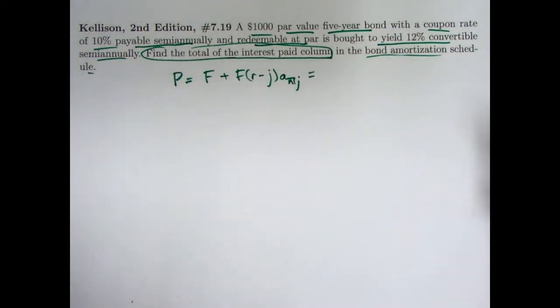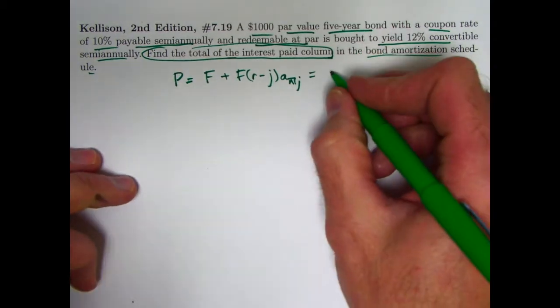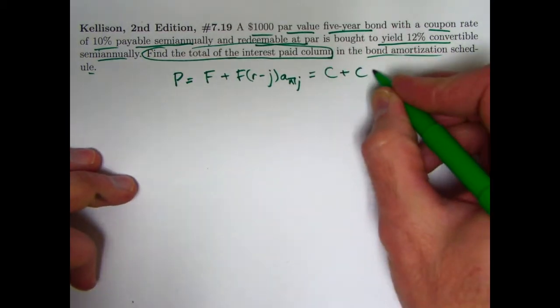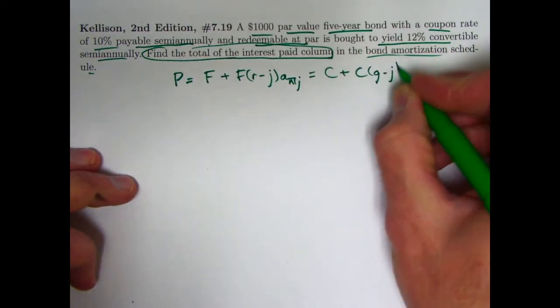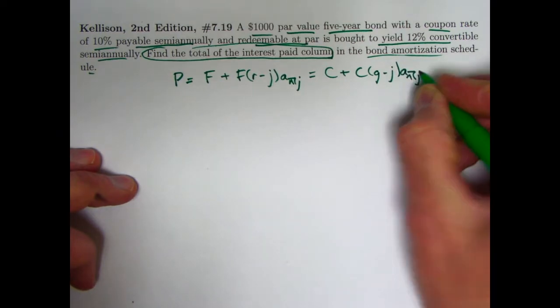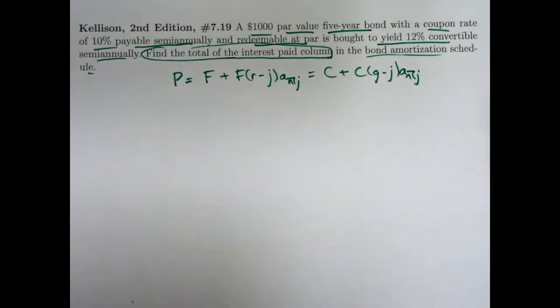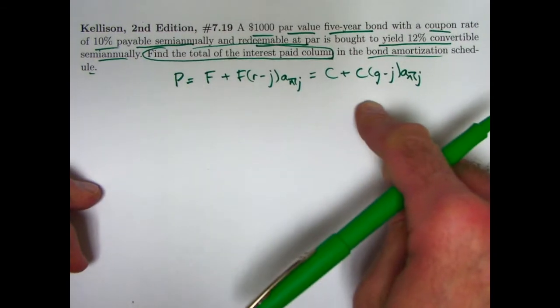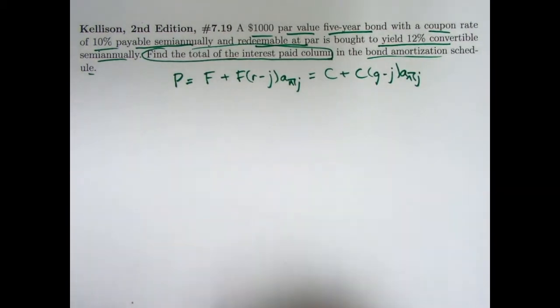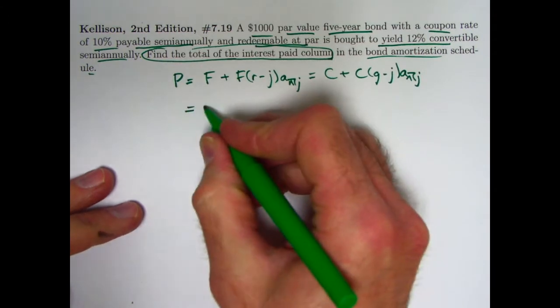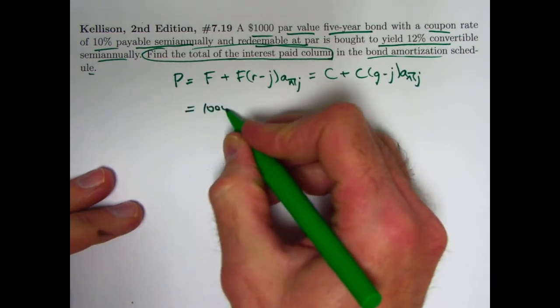In general, though, f needs to be replaced by c, the redemption value, and r needs to be replaced by g, the modified coupon rate. In that case, the formula would look like this. But in the present case, since the bond is redeemable at par, you can think of it either way. I think I will focus on thinking it this way, to focus on the more general fact as something that you might have to deal with in general. But in both cases here, the face and redemption values are both a thousand.